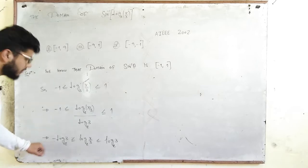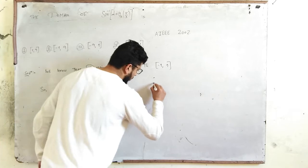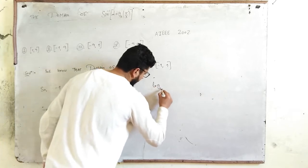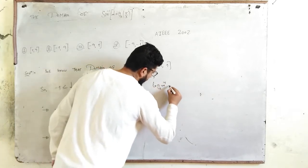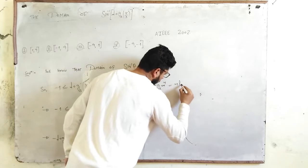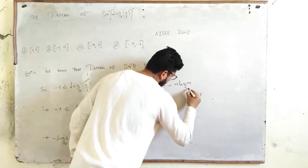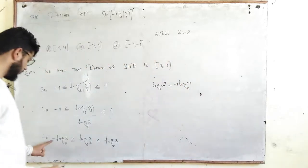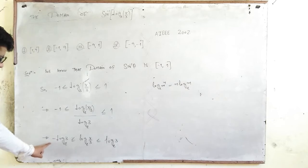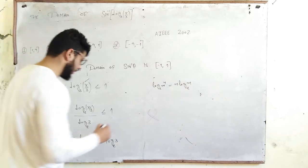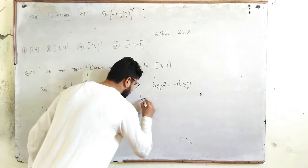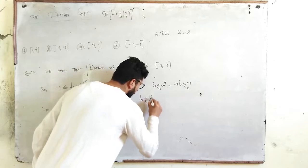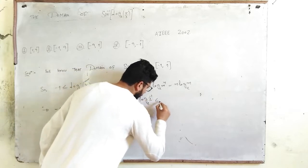Now we can use the result that log(mⁿ) = n·log(m), and this is in reverse also true. We'll take the -1 here, so we'll get ln(3⁻¹) ≤ ln(x/3) ≤ ln(3).